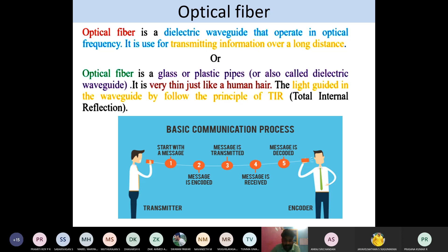In the basic communication process, we have two persons — one who transmits the information and another who receives it. So we have two ends: from one end we transmit the signal, and on the other end we receive the signal.